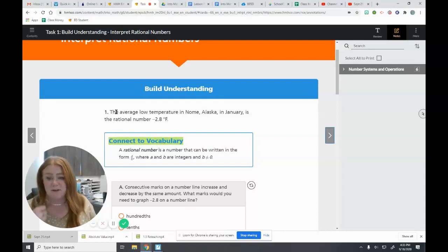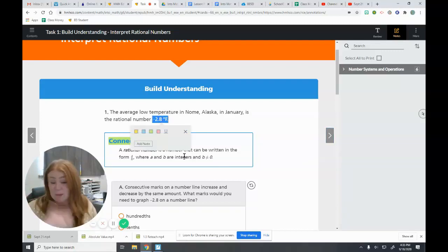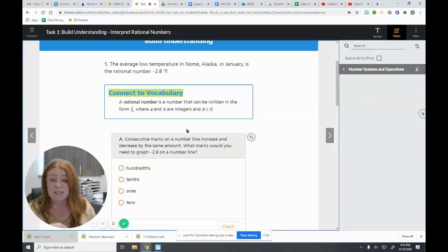It tells us that the average low temperature in Nome, Alaska in January is the rational number negative 2.8 degrees Fahrenheit. So it's below zero on average, negative 2.8 degrees.